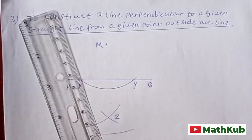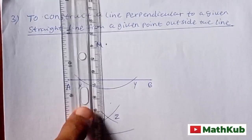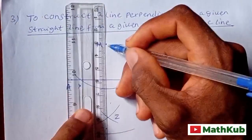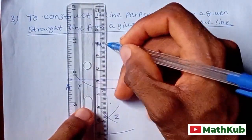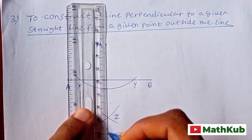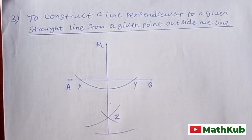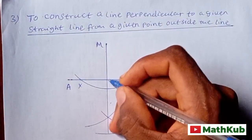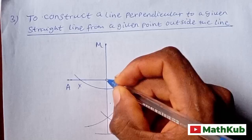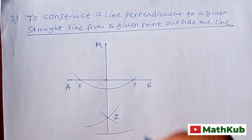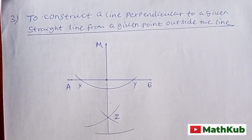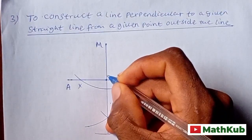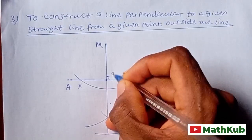Then you join M to Z, and then you have a midpoint here. This is the line perpendicular. You know the meaning of perpendicular: for a line to be perpendicular to another line, the angle between them must be 90 degrees.